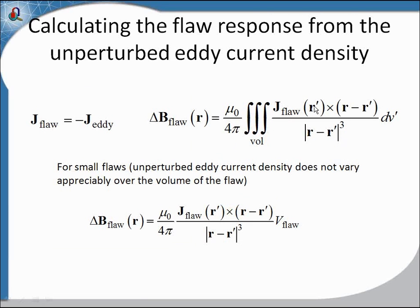If we approximate the flaw current as minus the unperturbed eddy current density within the volume of the flaw, we can therefore calculate the magnetic field due to the flaw current from the Biosavar law, where the R-prime coordinate is taken over the volume of the flaw. For small flaws where the unperturbed eddy current density does not vary appreciably over the volume of the flaw, we can approximate this integral with simply the volume of the flaw — the unperturbed eddy current density times the volume of the flaw times the geometrical factor gives us the change in magnetic field.